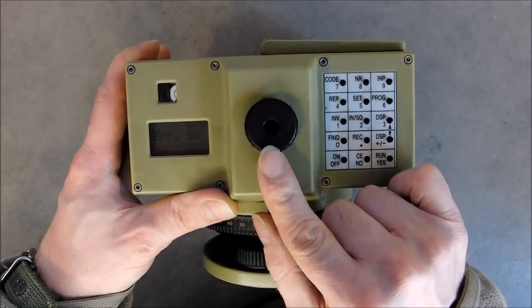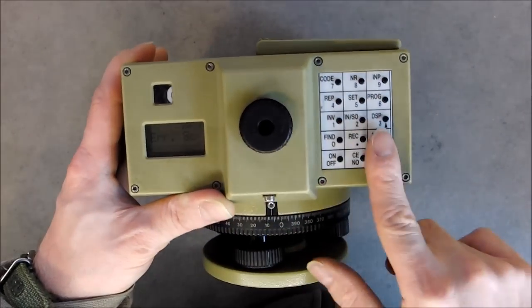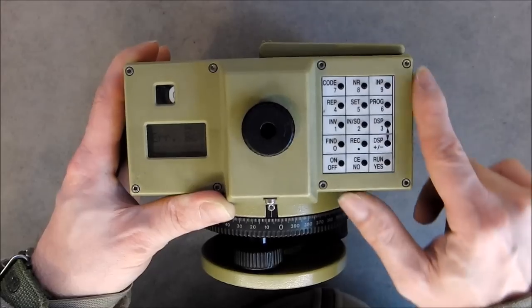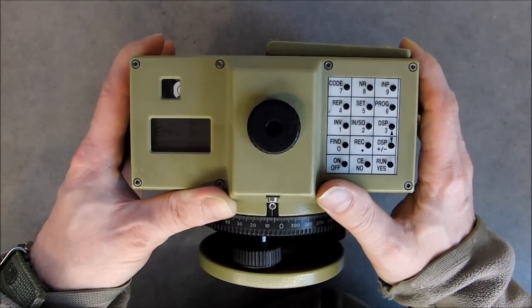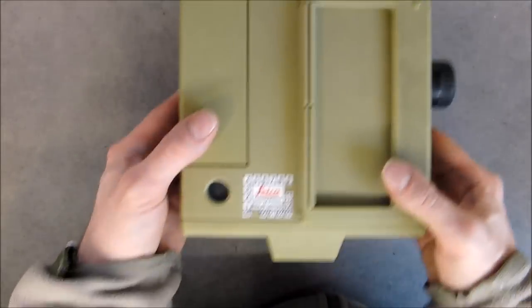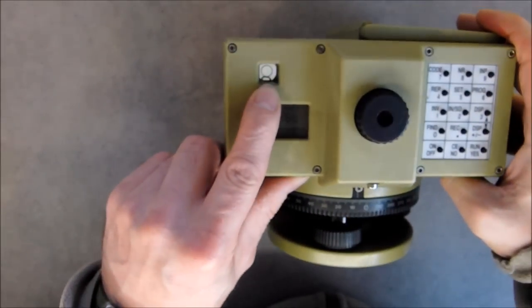There is the eyepiece here, little LCD display here, keyboard. You can see the case is attached with Allen screws, which is a sign of quality. Little handle on the top. Bubble level here, with matching eyepiece here to check the level.